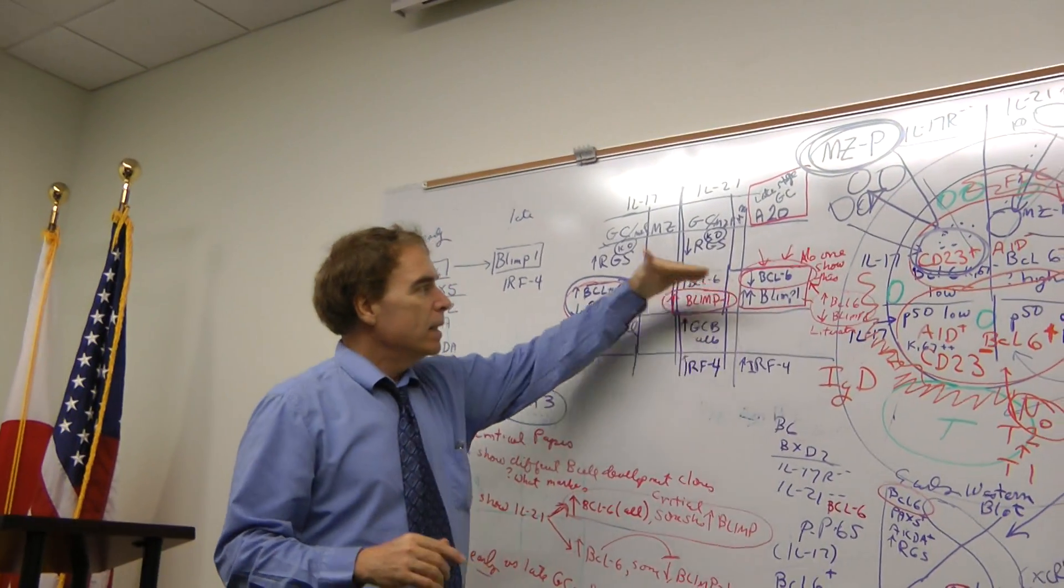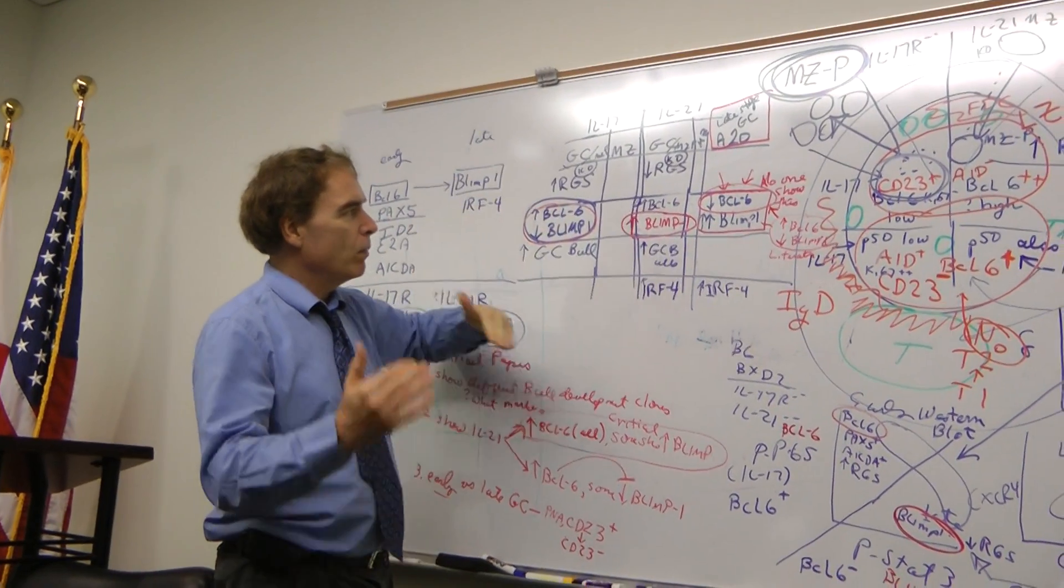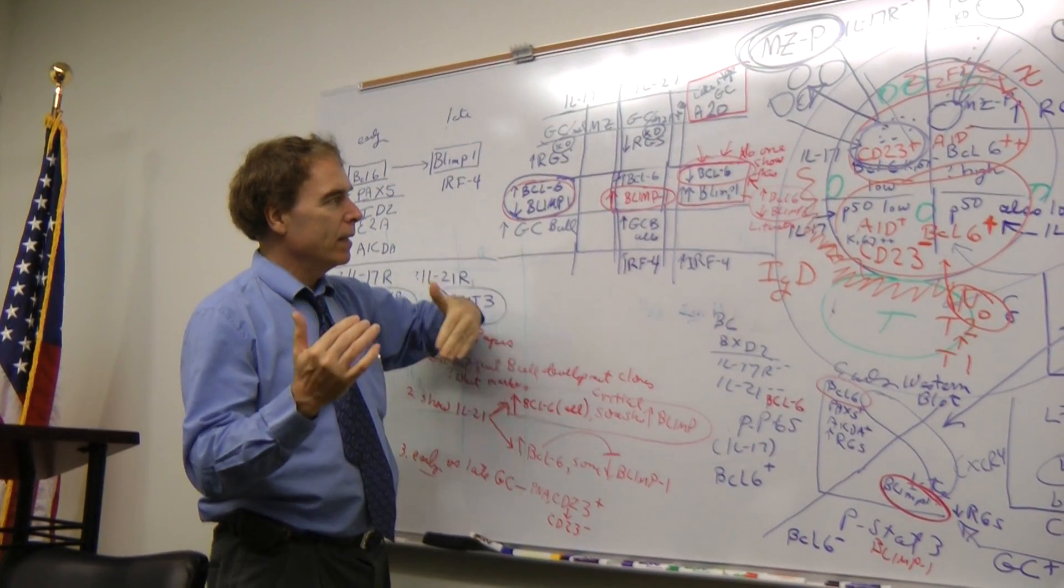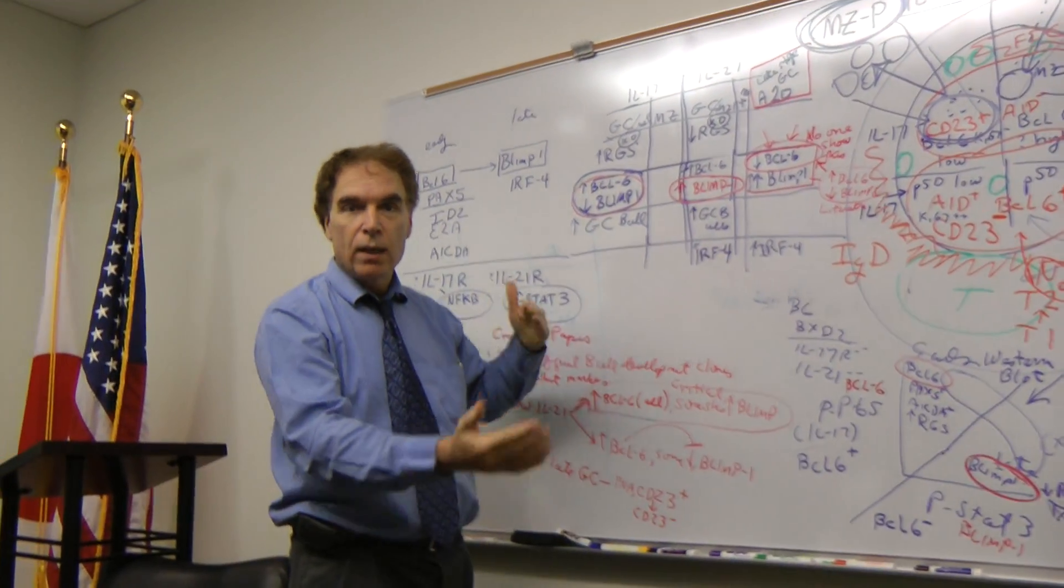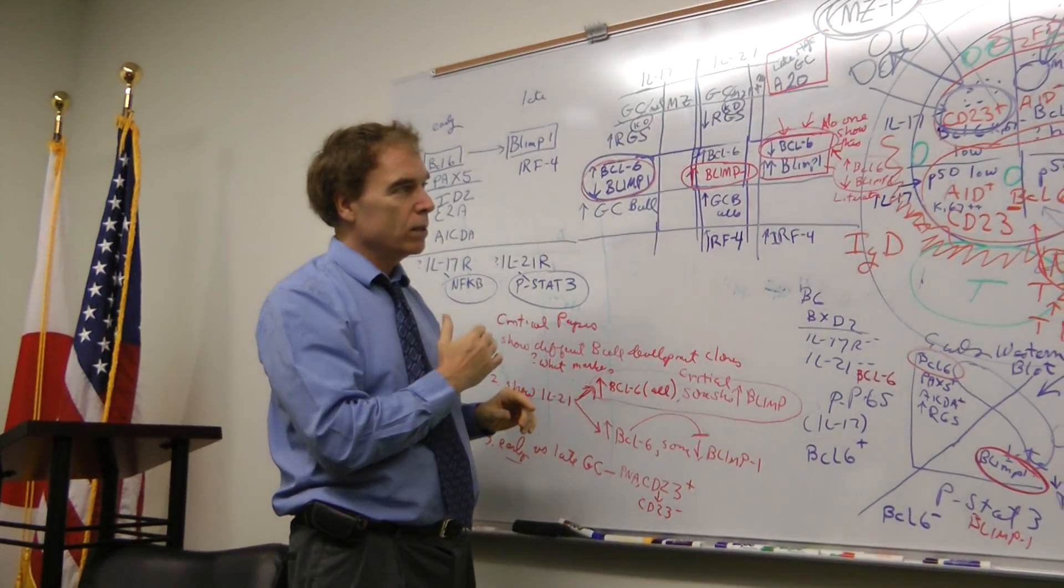But BCL-6 and BLIMP-1 are counter-interactive. So then it came to BLIMP-1 enables a later stage, BCL-6 enabled the earlier stage.